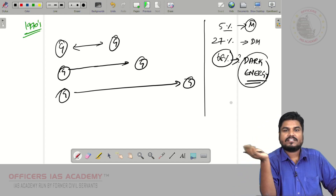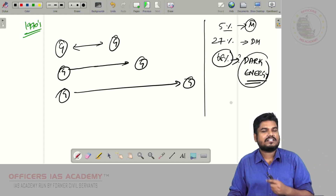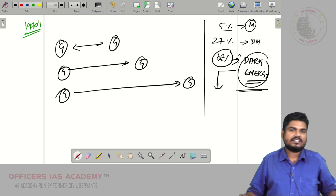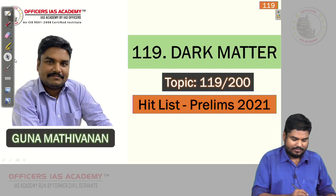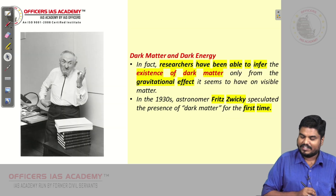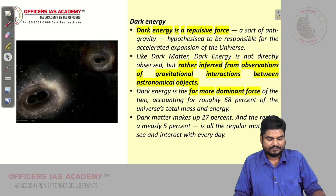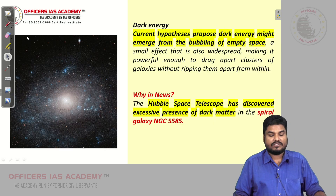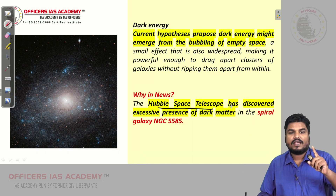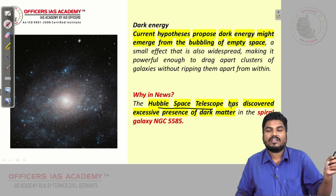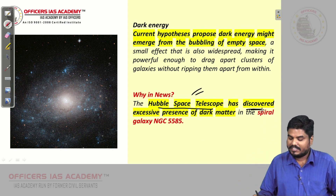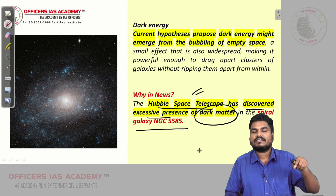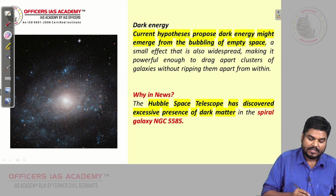The dark energy is a repulsive force — it is opposite to the force of attraction, opposite to gravitational force. It is believed that the remaining 68% of the universe is made up of this dark energy, and this will be the supreme energy in the universe. Fritz Zwicky in the 1930s initially observed dark matter. So why is dark matter in the news? The Hubble Space Telescope has discovered excessive presence of dark matter in a galaxy called spiral galaxy NGC 5585. In that galaxy, it observed excessive presence of dark matter. That is why it was in news.